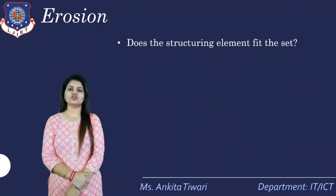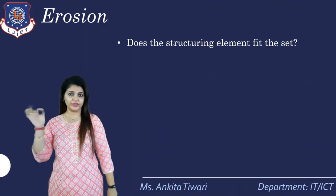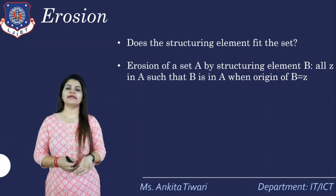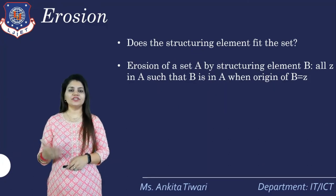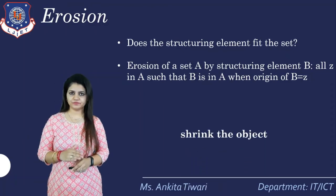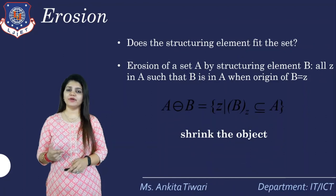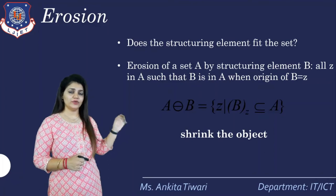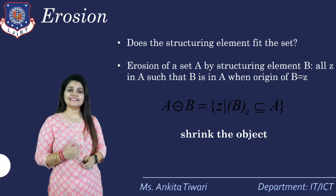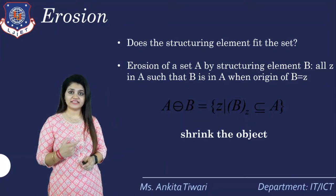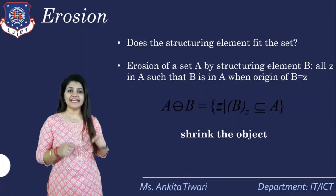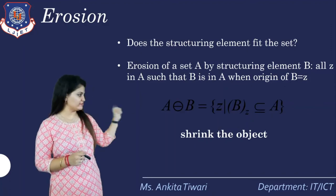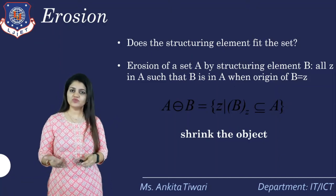For erosion, the key question is: does the structuring element fit into the set? The erosion of set A by structuring element B is defined as all z in A such that B translated to origin z is contained in A. It shrinks the object. The symbolic notation uses a circle with a dash symbol, representing the set of (x, y) values where B is a subset of A.